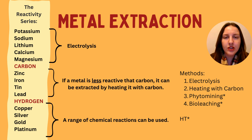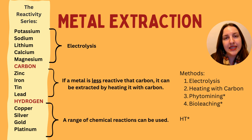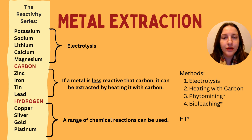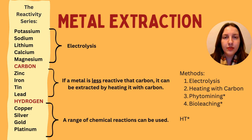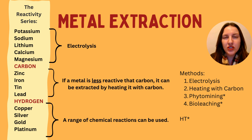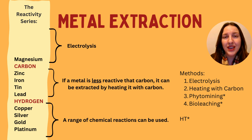Any metal that is less reactive than carbon — zinc, for example — can be extracted when it is heated with carbon. Remember, carbon is a non-metal and is found on the right-hand side of the periodic table. There are also other reactions in chemistry that can be used to extract other inert metals. Often these ones are found within their raw state, but the exam board just wants you to know that there are other chemical reactions that can be used, without requiring a huge amount of detail.